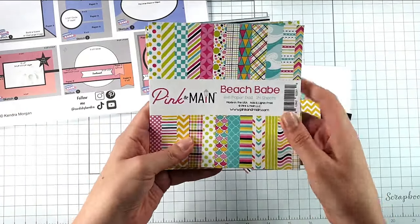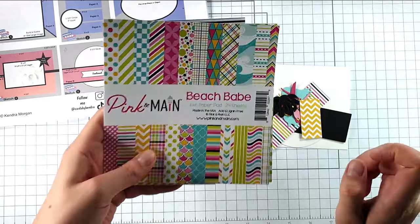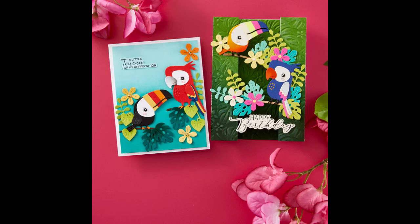So for my card today, I'm going to be using this Pink and Main Beach Bay pattern paper and then I'll also be using a little die-cut parrot which is from the May Spellbinders Day of the Month. You can still get it on their website.